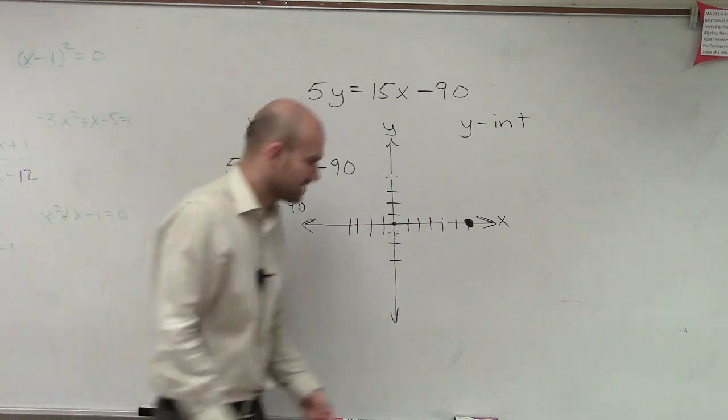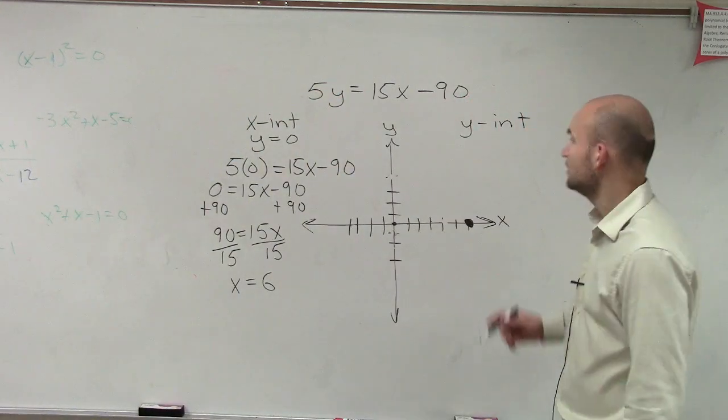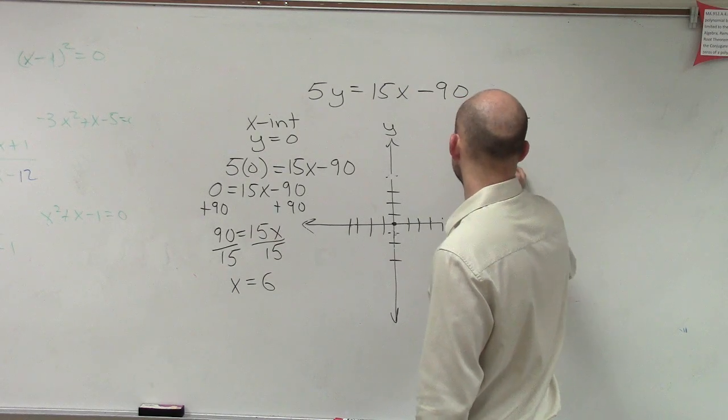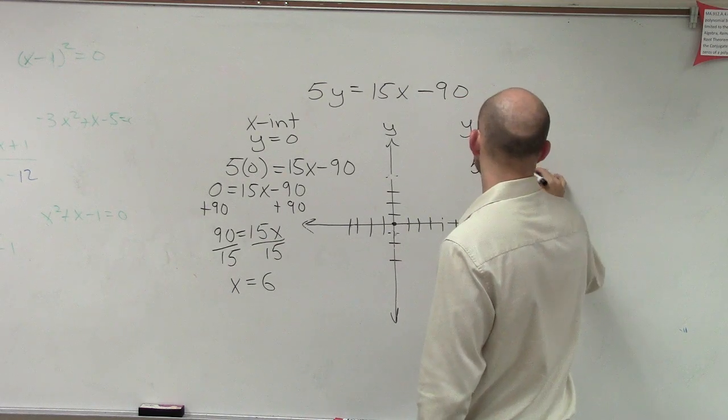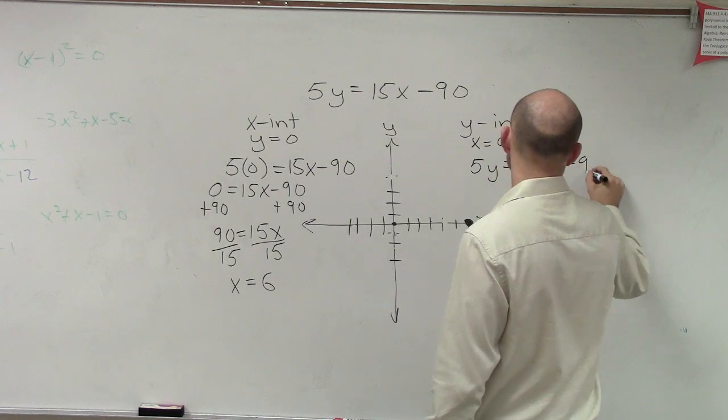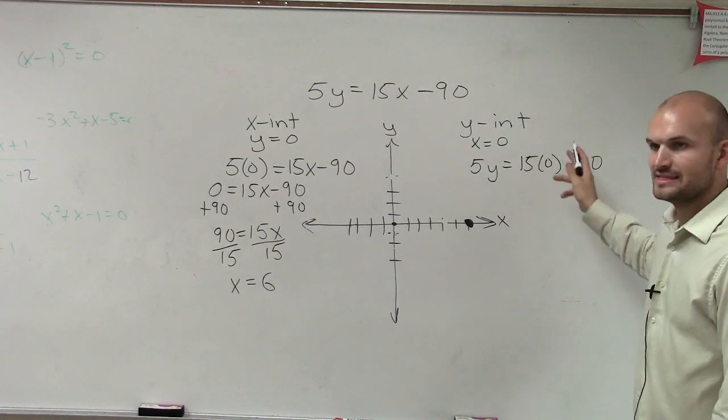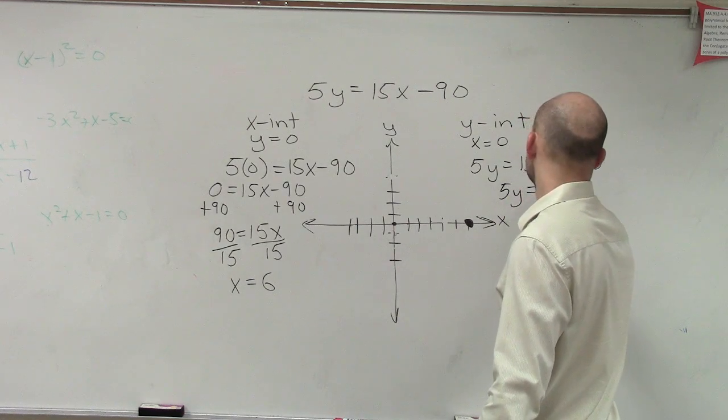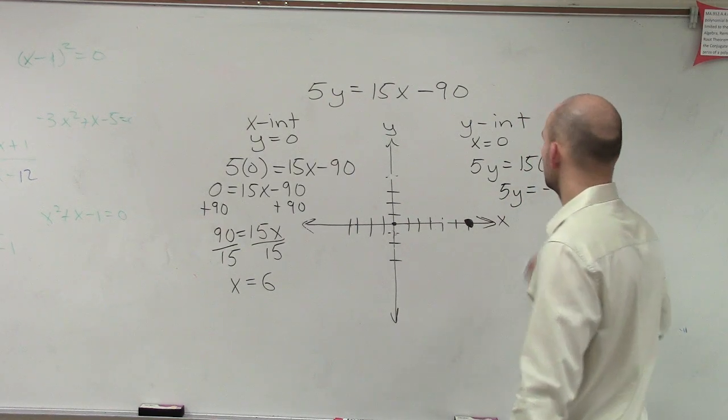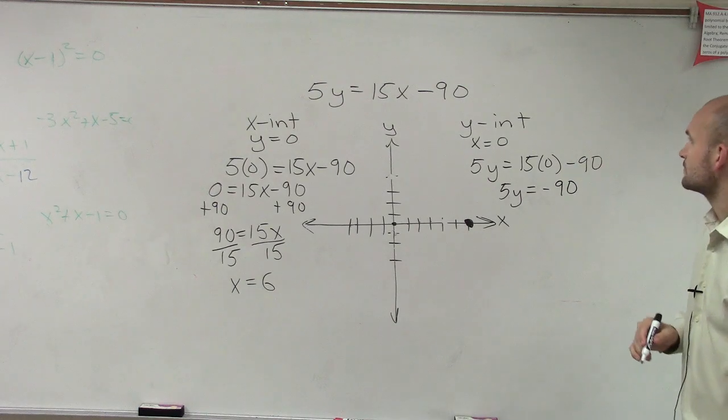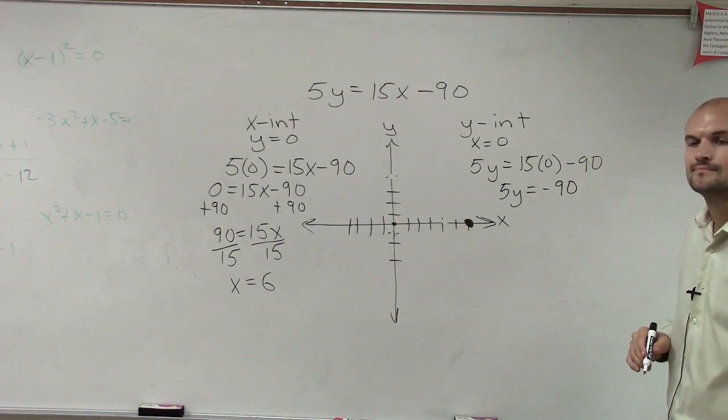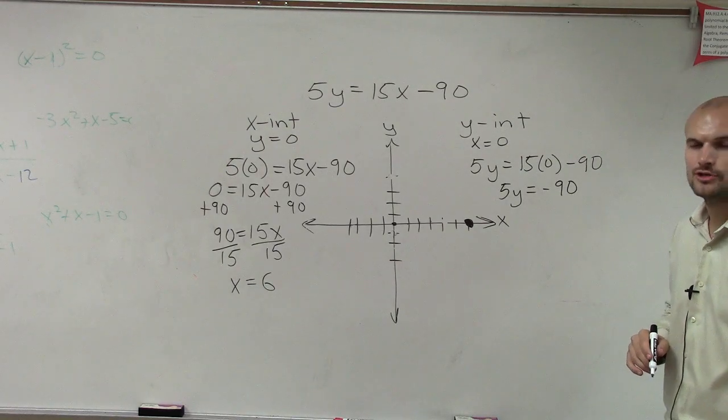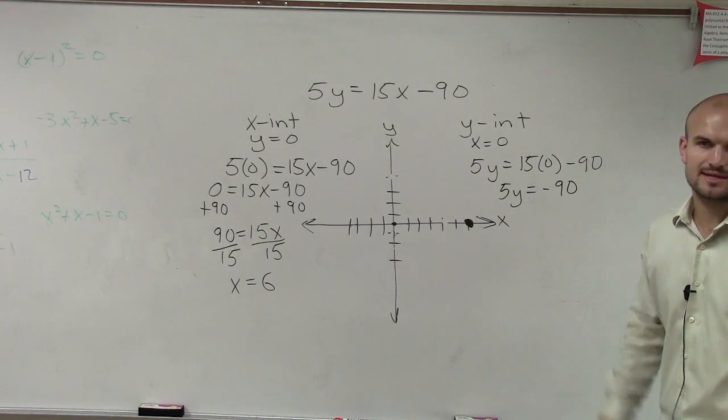Now let's determine the y-intercept. The y-intercept is when you have x equal to 0. So I do 5y equals 15 times 0 minus 90. 15 times 0 is 0. Since it's 15 times 0, you can just leave the 15 times 0 out and make it a smaller equation to where all you have to do is 90 divided by 5 on the side. You can do a lot more work faster. I'm showing it step by step.